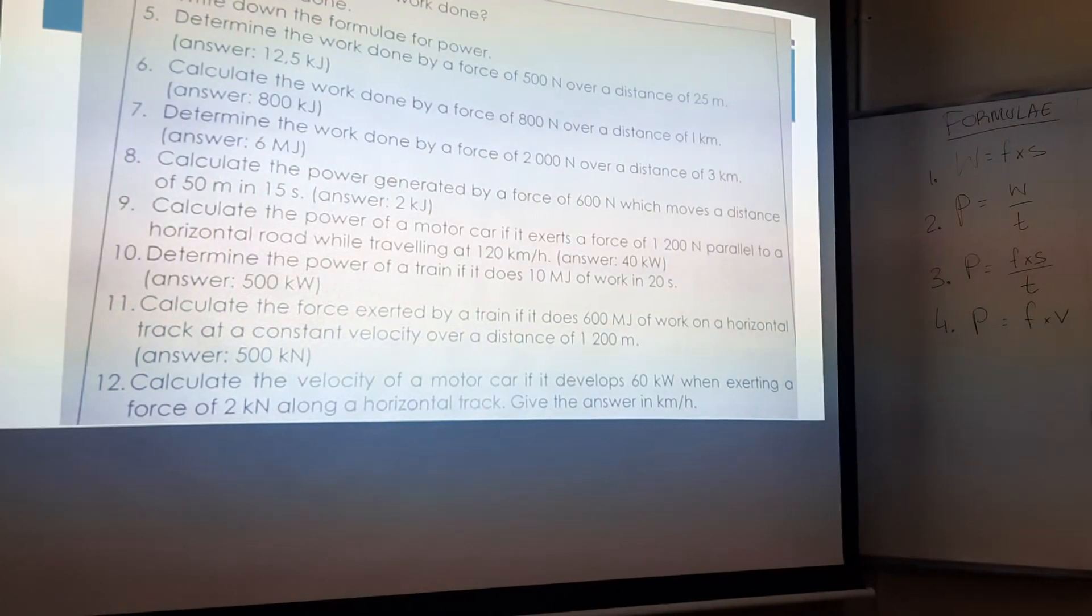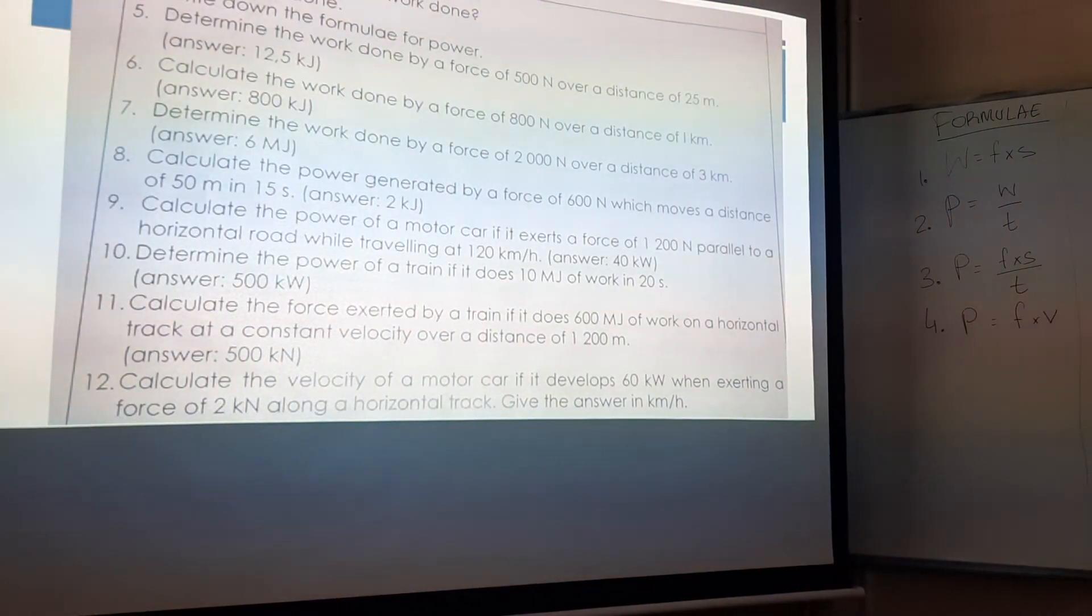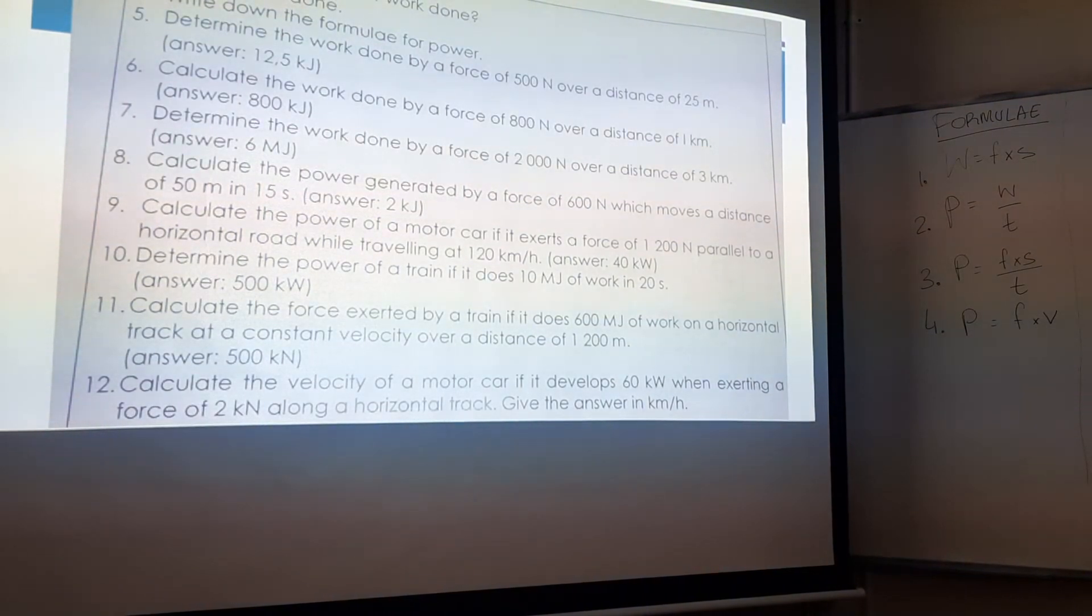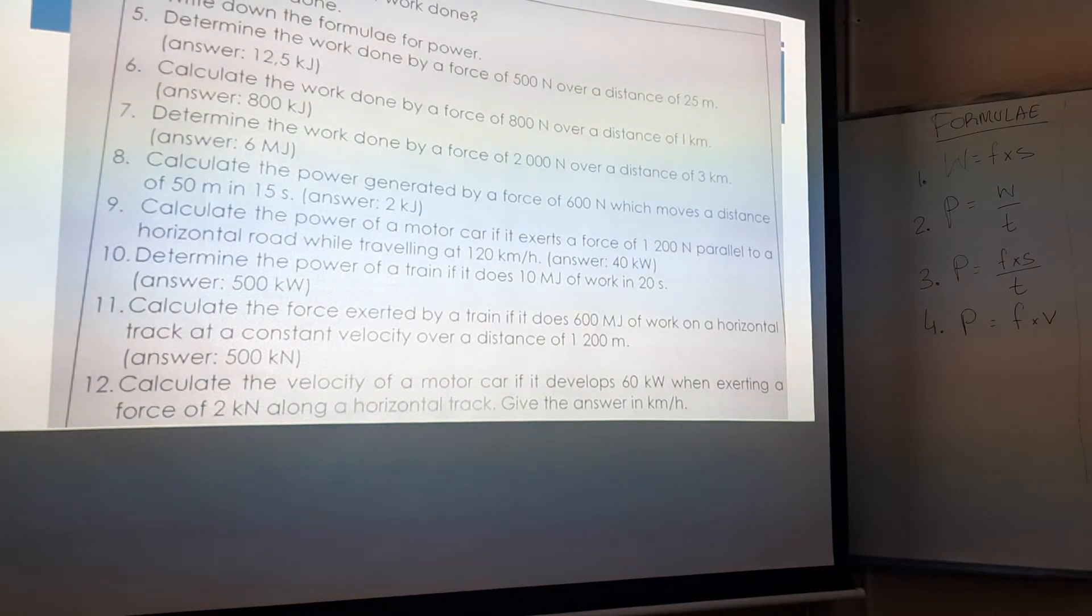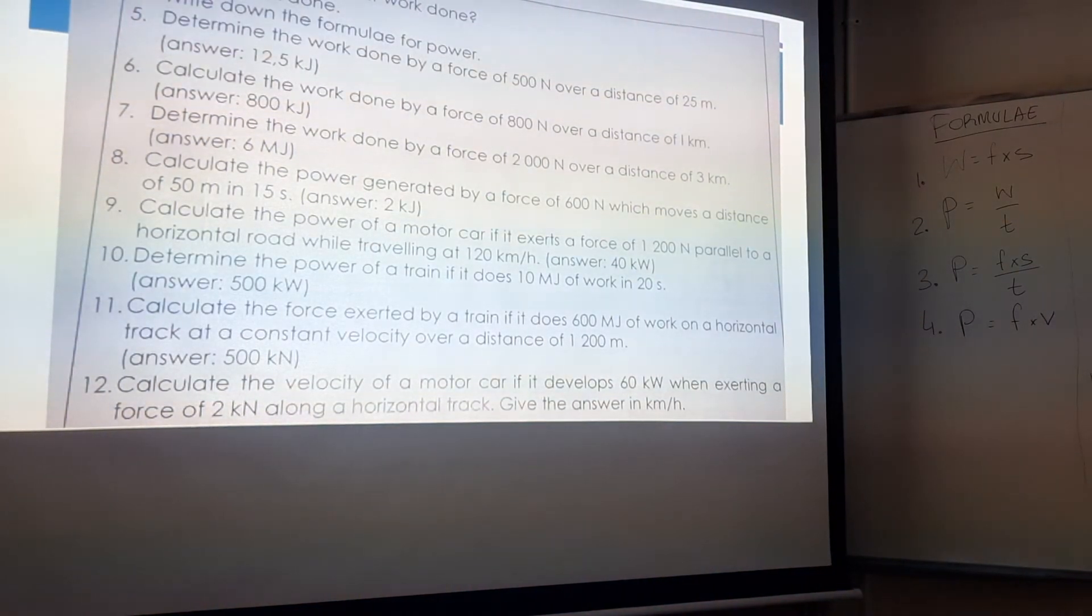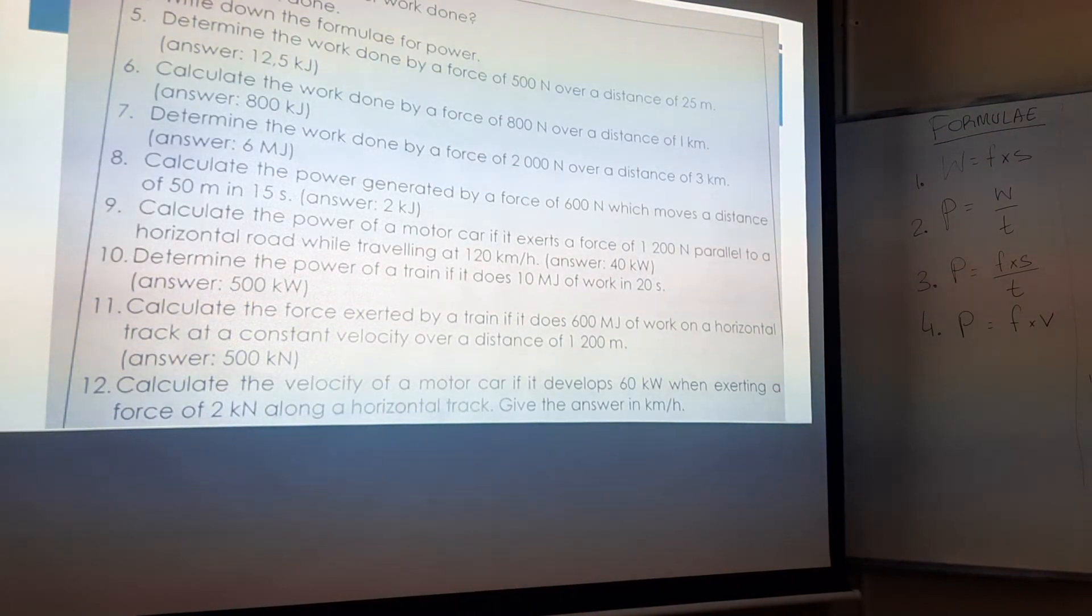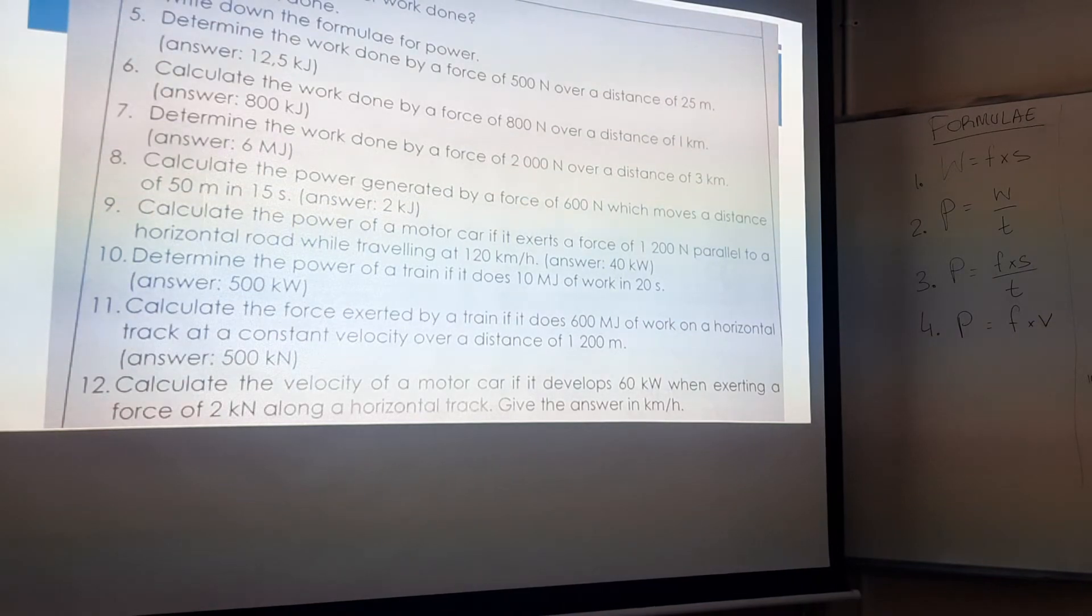Calculate the power generated by a force of 600 newtons. So, the force is 600 newtons, which moves a distance of 50 meters, which moves a distance of 50 meters in 15 seconds. So, the time is 15 seconds.